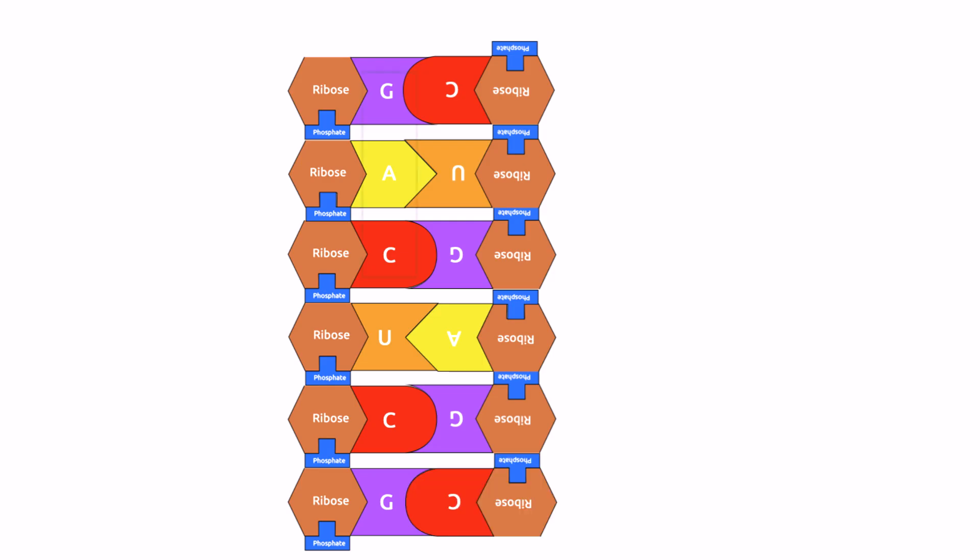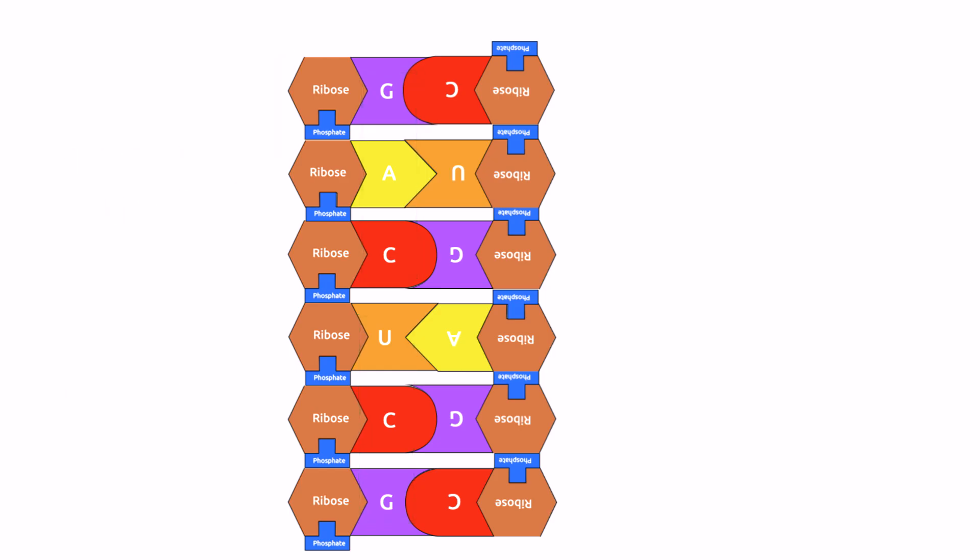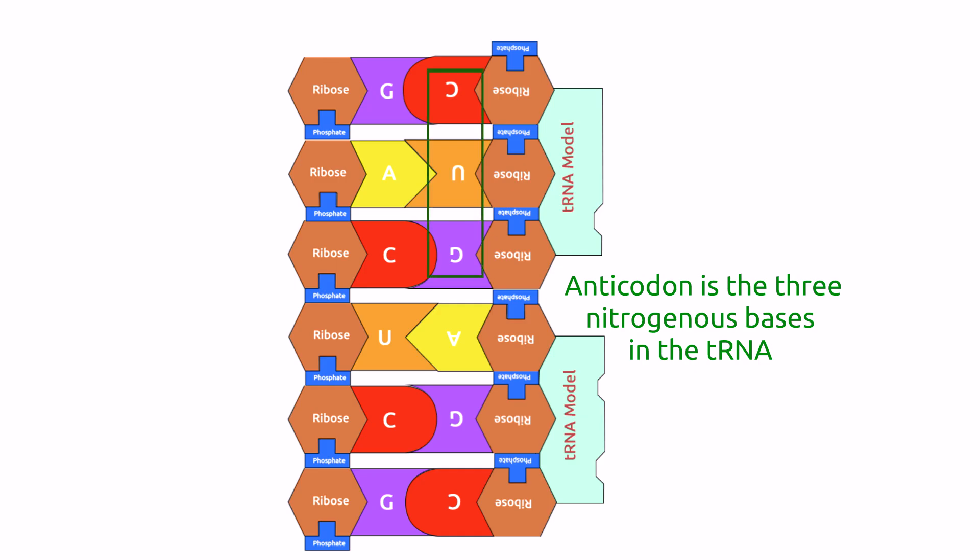By the way, the GAC are the nitrogenous bases which represent one codon. And the second codon is UCG. Then we have the tRNA, the three nitrogenous bases, is called the anticodon. So the first anticodon is CUG. And the second anticodon is AGC. Okay, so please take note of that.